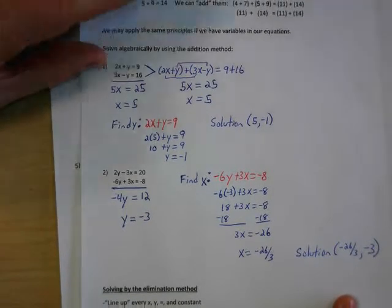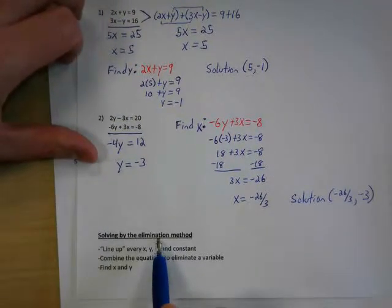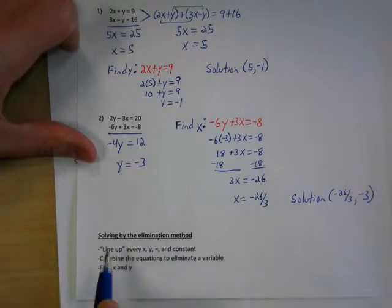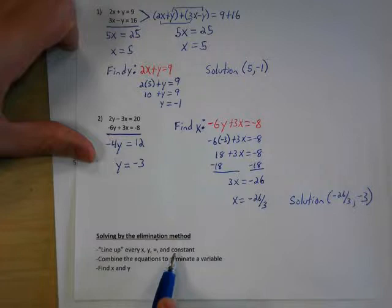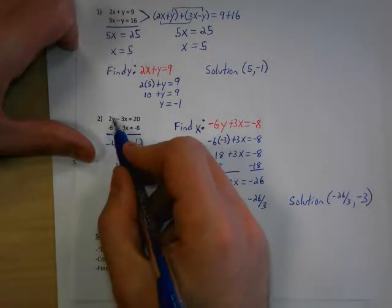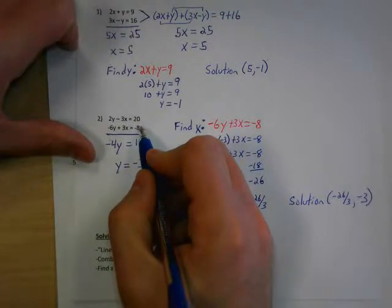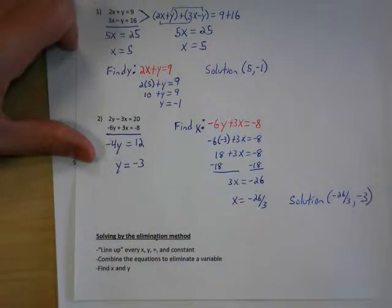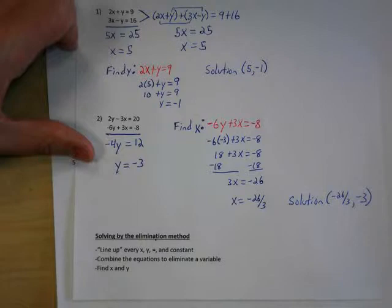When you look at the elimination or addition method, notice that everything is lined up — the x's, y's, equals signs, and constants. That's when you're going to use this method. We combine the equations to eliminate a variable, then find x and y.